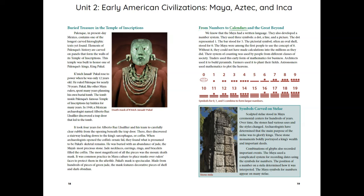From Numbers to Calendars and the Great Beyond: The Maya had a written language and also developed a number system. They used three symbols: a dot, a line, and a picture. The dot represented one, the bar stood for five, and the pictorial symbol — often an oval shell — stood for zero. The Maya were among the first people to use the concept of zero. Without it, they could not have made calculations into the millions as they did. Their system of counting was used by people from different classes of society. Traders used this early form of mathematics for business, architects used it to build pyramids, farmers used it to plant their fields, and astronomers used mathematics to plot the heavens.